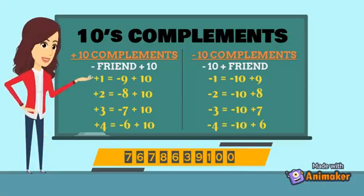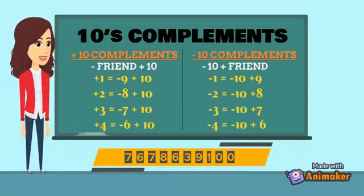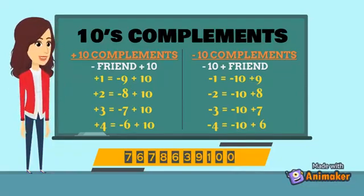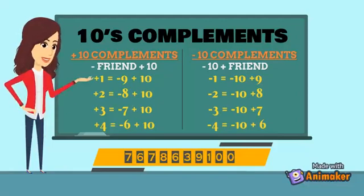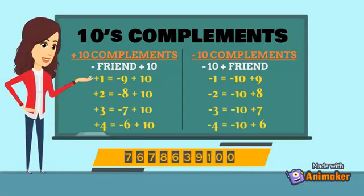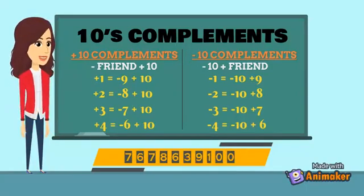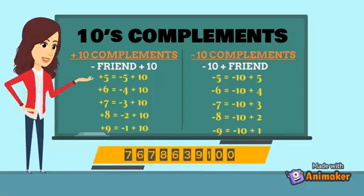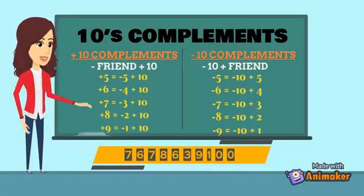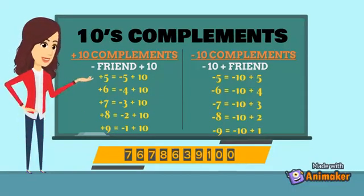For plus one: the friend of one is nine, so write minus nine plus ten. For minus one: minus ten plus nine. For plus two: minus eight plus ten. For minus two: minus ten plus eight. For plus three: minus seven plus ten. For minus three: minus ten plus seven. For plus four: minus six plus ten. For minus four: minus ten plus six. For plus five: minus five plus ten. For minus five: minus ten plus five.